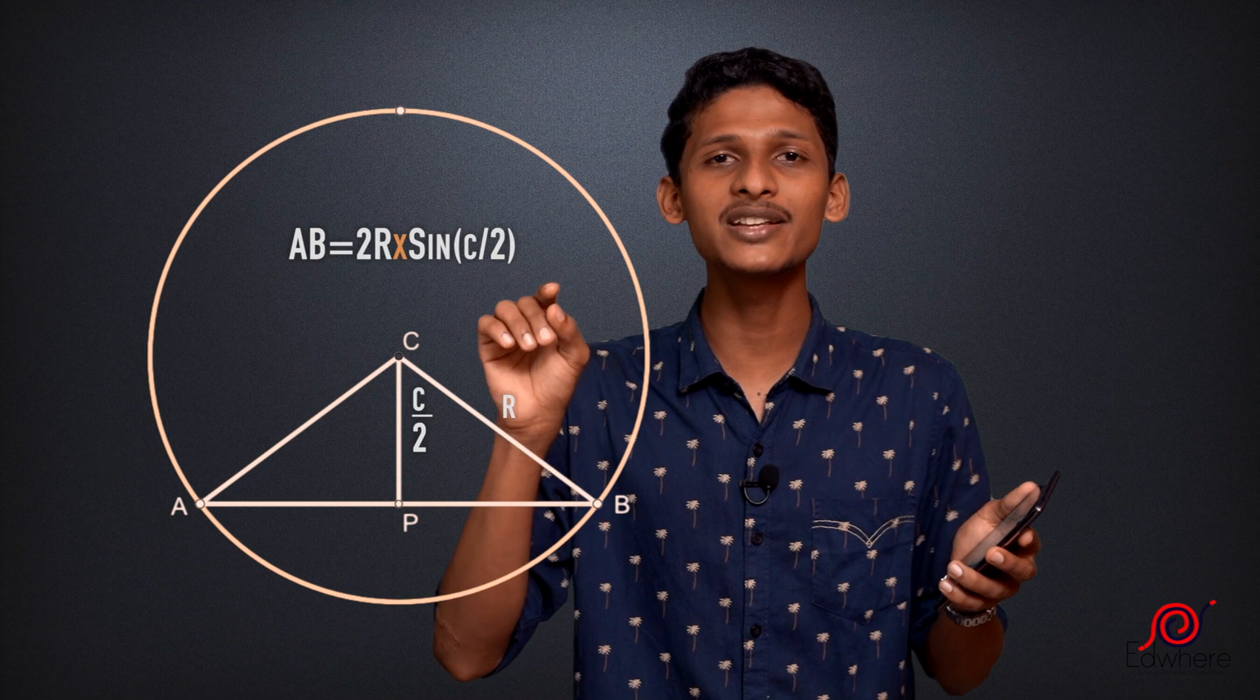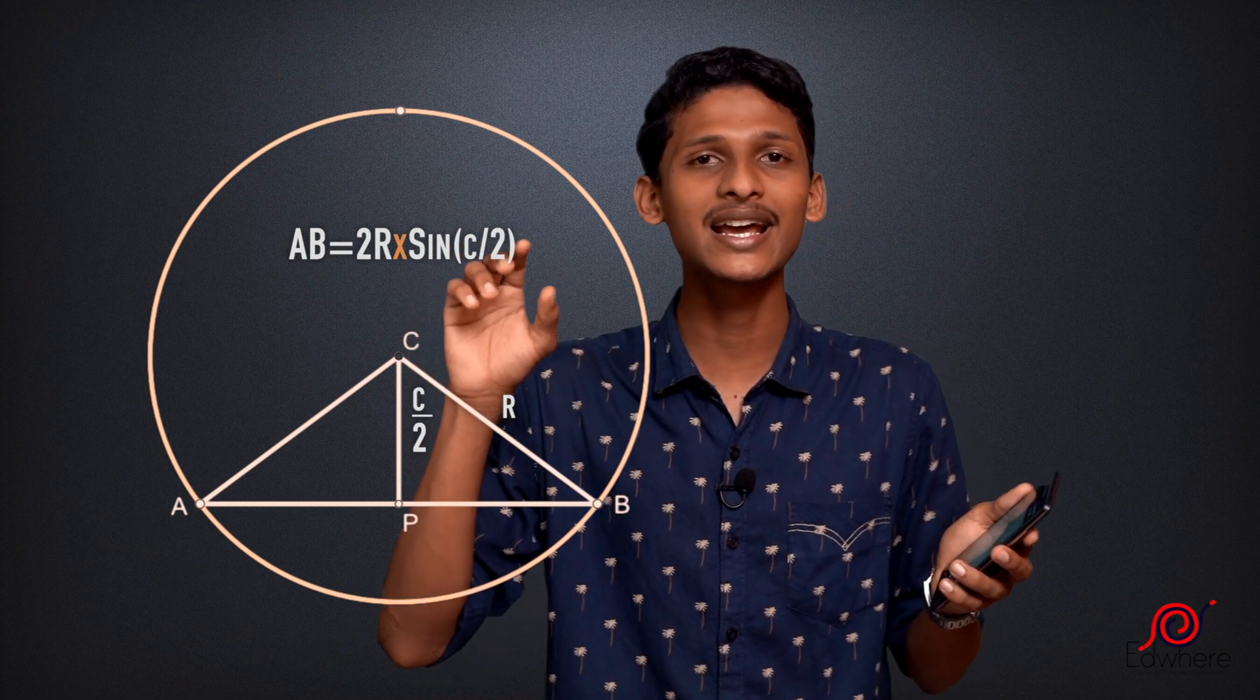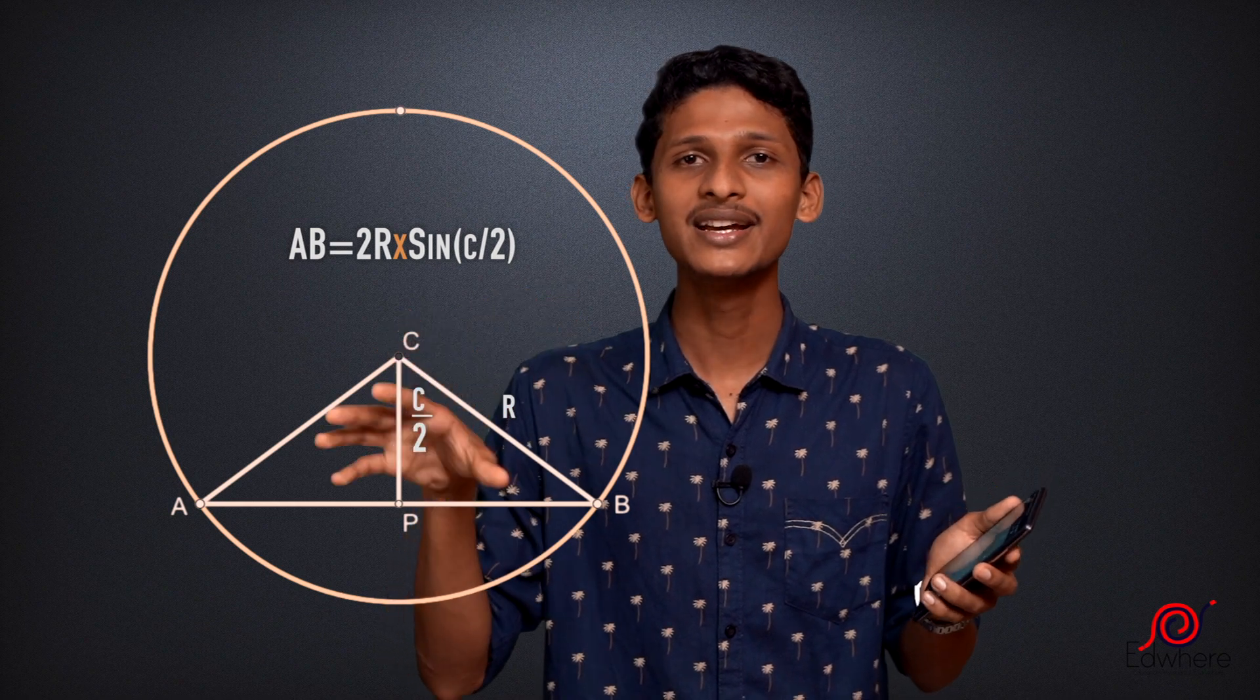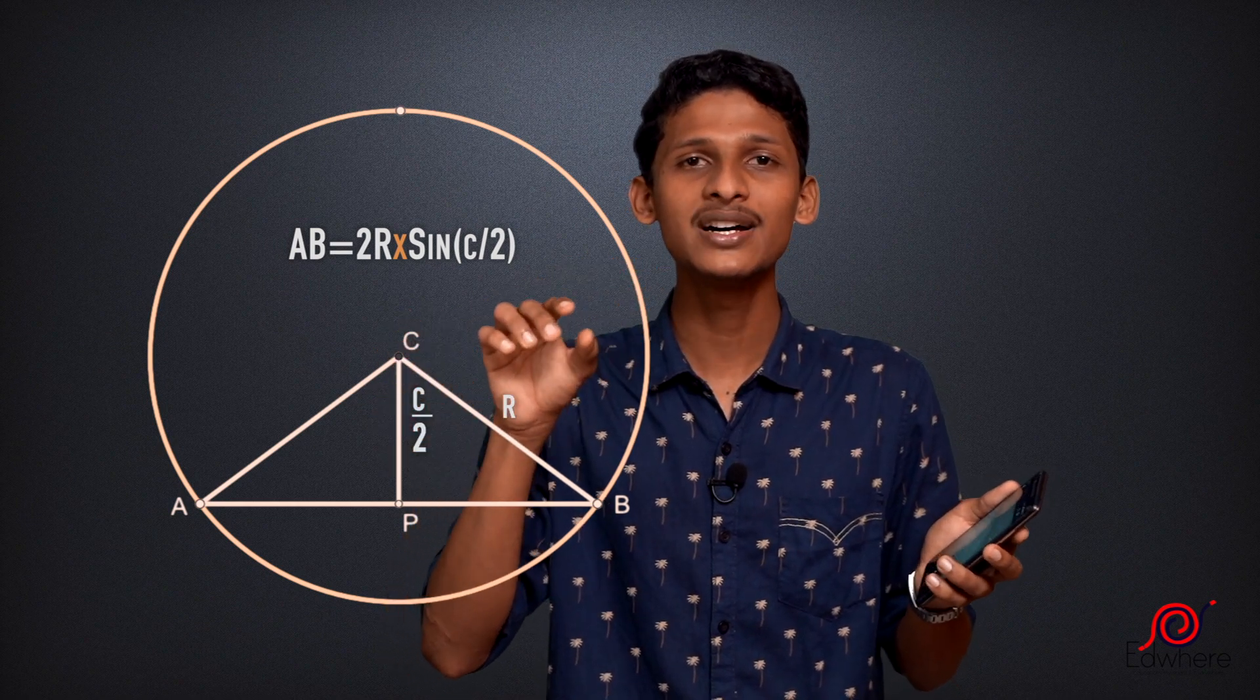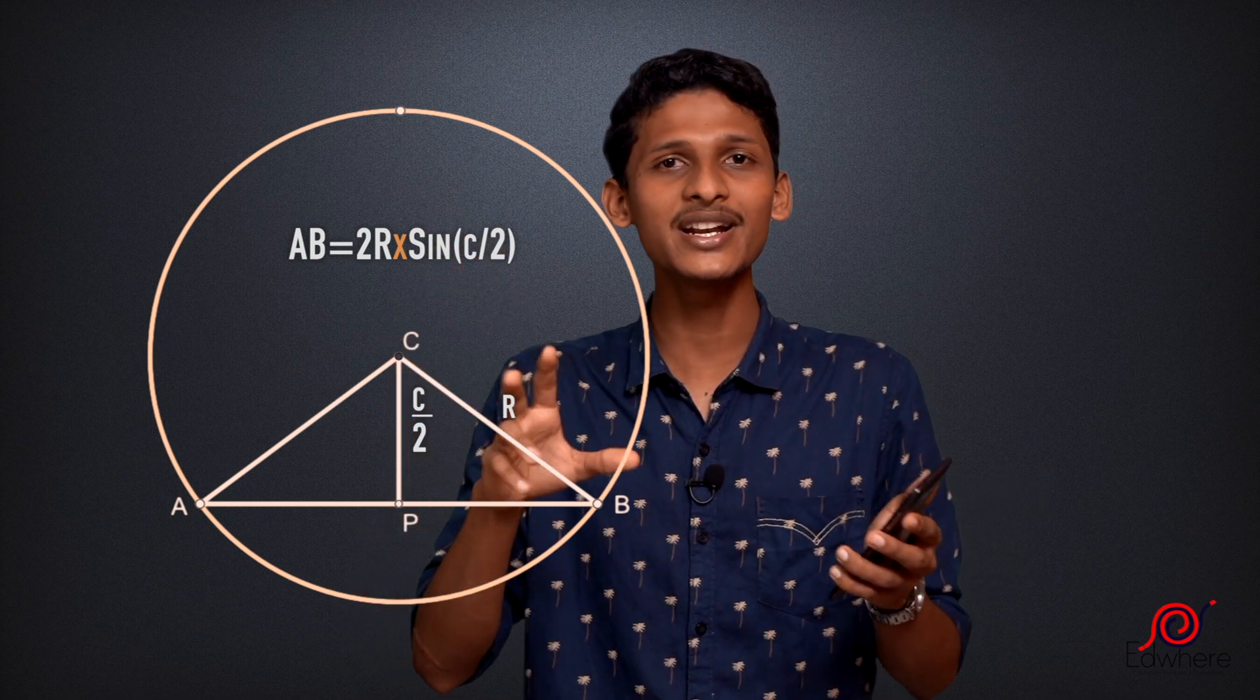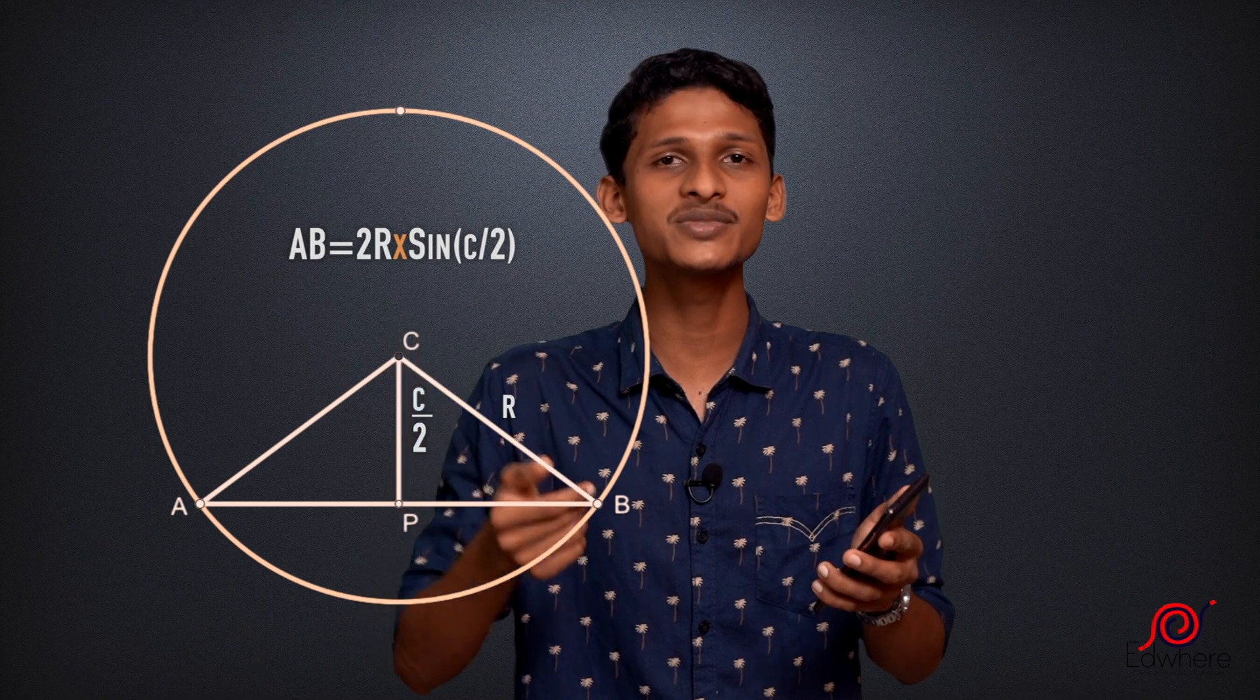Now we have the radius R, C by 2 is the central angle. AB is the chord length. Now we have a relation between length, radius, and central angle. This relation is very useful.